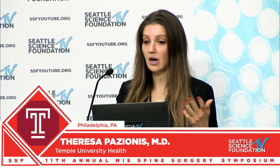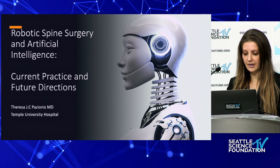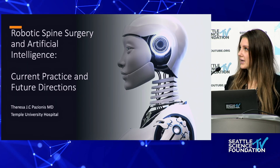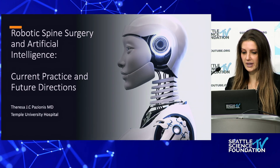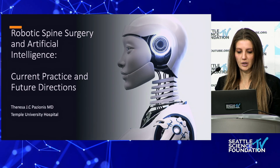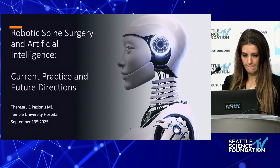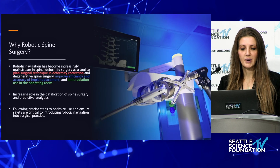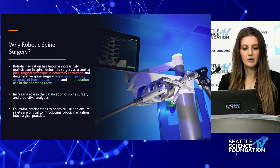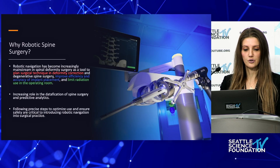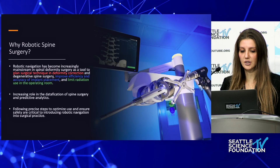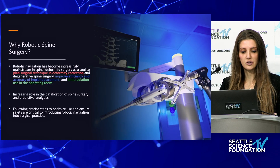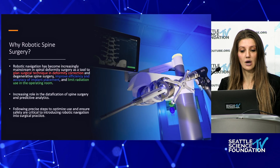You might wonder what purpose robotics serves, given that you can use augmented reality or fluoroscopy — there are lots of different ways to do the same job. But the key thing is that we're performing good patient care, getting good sagittal parameters, correcting deformity, and making sure that we minimize fluoroscopy in the OR.